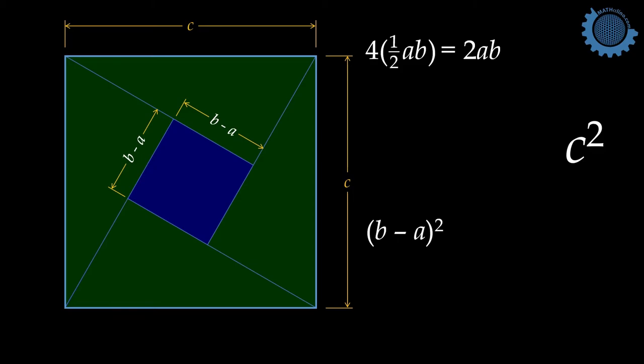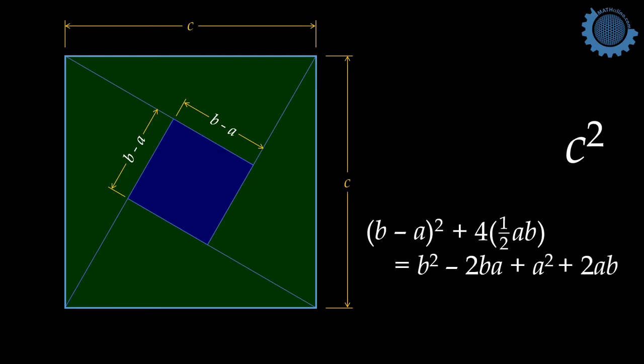Let us expand the quantity B minus A squared. And then, let us add 4 times one half AB to B minus A raised to 2. Cancel negative 2BA and 2AB.